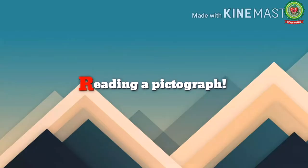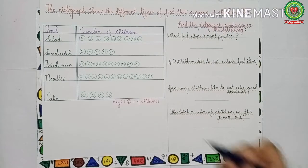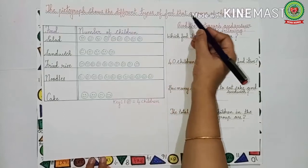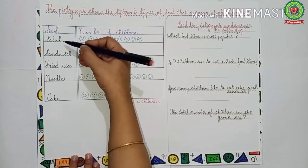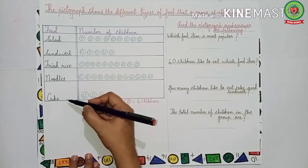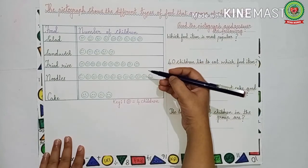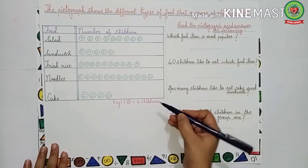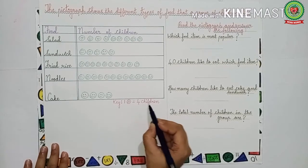First of all, let us learn how to read a pictograph. As you can see, there is a pictograph drawn over here. The pictograph shows the different types of food that a group of children like. The names of different food items are written over here: salad, sandwich, fried rice, noodles and cake. Smiley faces are drawn to show how many children like each food item. We will read it with the help of the key: one smiley face is equal to four children.